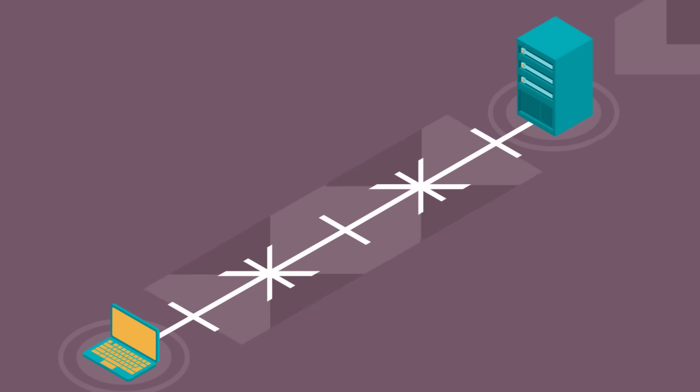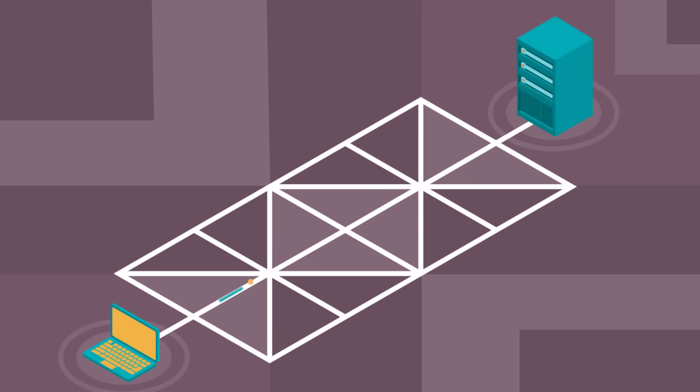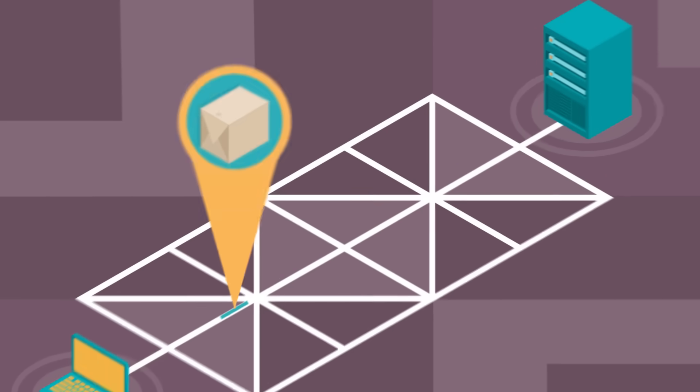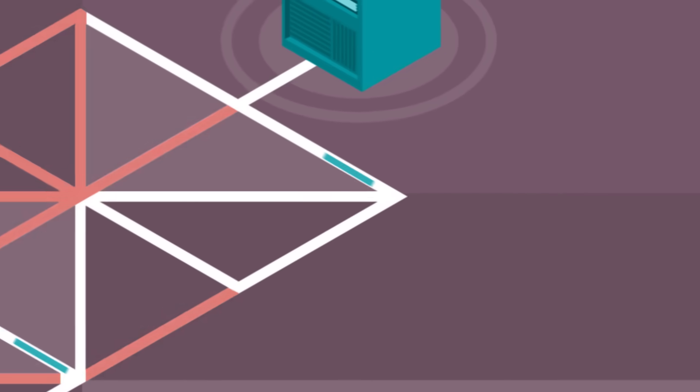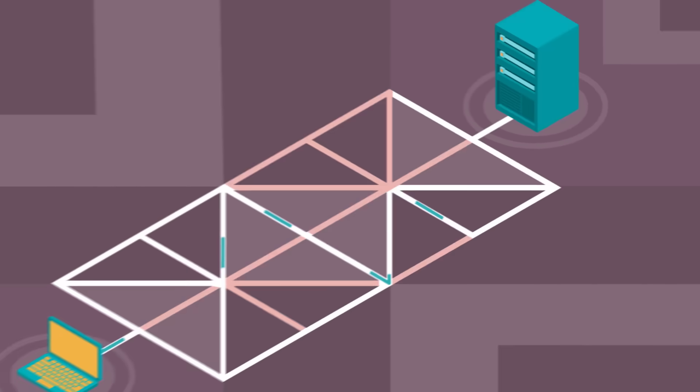Information on the internet goes from one computer to another in what we call a packet of information. A packet travels from one place to another on the internet a lot like how you might get from one place to another in a car. Depending on traffic congestion or road conditions, you might choose or be forced to take a different route to get to the same place each time you travel.